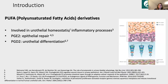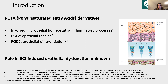In the bladder, PUFA derivatives — in particular prostaglandin E2 and prostaglandin D2 — are involved in the regulation of urothelial homeostasis and inflammatory processes. PGE2 is thought to have a role in epithelial repair, and PGD2 is thought to have a role in urothelial differentiation by binding and activating the PPAR-gamma receptor. However, their role upon urothelial barrier functions and associated processes such as cell proliferation and cell death remains currently unknown, as well as their involvement in spinal cord injury-induced urothelial dysfunctions.